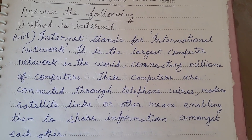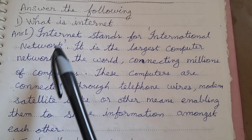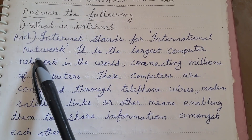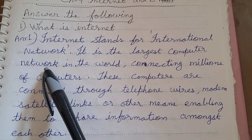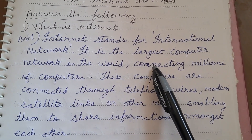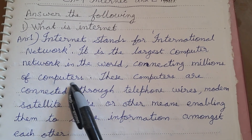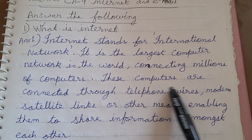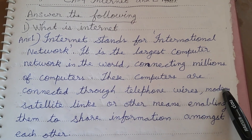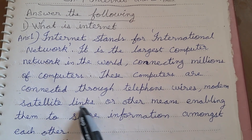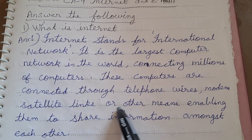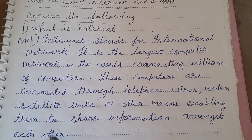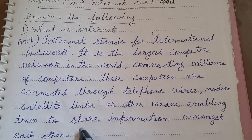What is Internet? Internet stands for International Network. It is the largest computer network in the world, connecting millions of computers. These computers are connected through telephone wires, modem, satellite links or other means, enabling them to share information amongst each other.